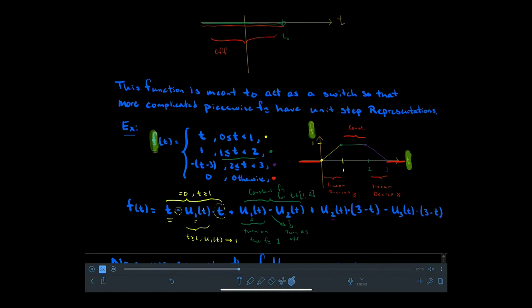The last time interval switches on at two seconds. It needs to be the linearly decreasing function, so at two seconds — after the green constant function is shut down by the subtraction of the two step functions u-one minus u-two — we turn on the function 3 minus t. I don't want this for all time, so at three seconds we turn off the same 3 minus t. This is the unit step function representation equivalent to the piecewise and graphical definitions.